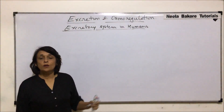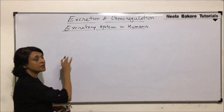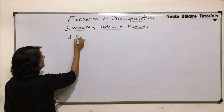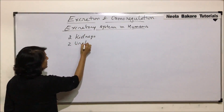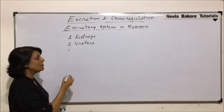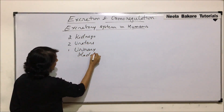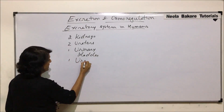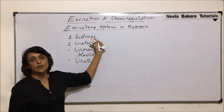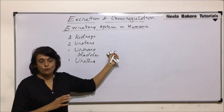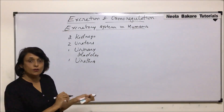Let us now talk about the excretory system in case of human beings. This excretory system comprises of two kidneys, two ureters, one urinary bladder, and one urethra. These are the parts of the complete system. We will first take up the kidneys — how they appear from outside, their location — and then we will come to the internal structure and the actual system.